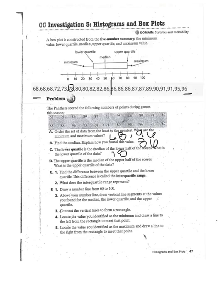For part D, the upper quartile is the median of the upper half of the scores. What is the upper quartile of the data? So, now we're looking at our higher half. So, we start from 96 and 86, work our way in until we get our median of 89.